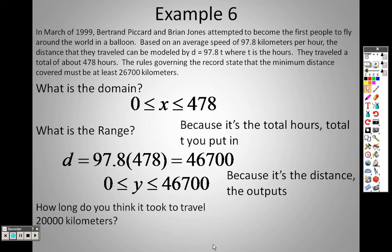So, how long do you think it took to travel 20,000 kilometers? Well, that means I put that in for D, because that becomes my distance. So, to solve this equation, 97.8 times T, I would divide both sides by 97.8.